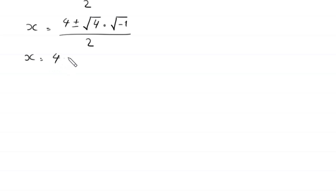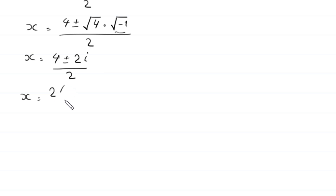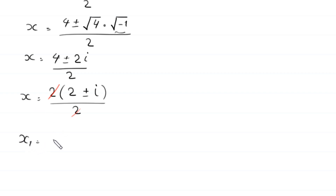x is equal to 4 plus or minus the square root of negative 4. The square root of negative 4 can be written as square root of 4 times square root of negative 1, which is 2i, divided by 2. Factoring 2 from the numerator gives 2 times (2 plus or minus i) divided by 2, so the 2's cancel. We get x1 equals 2 plus i and x2 equals 2 minus i.